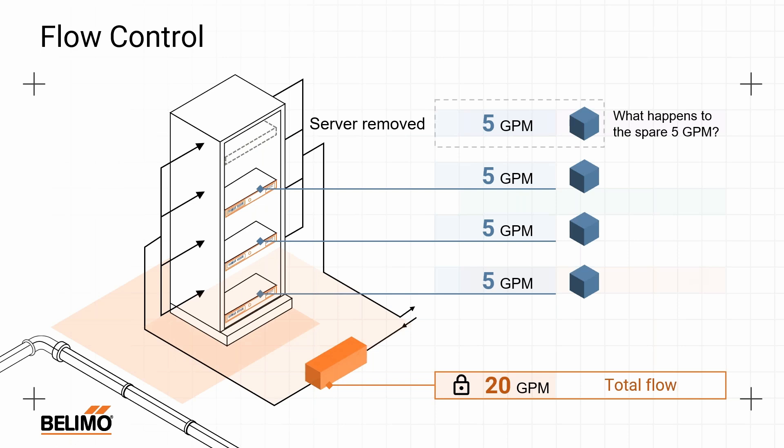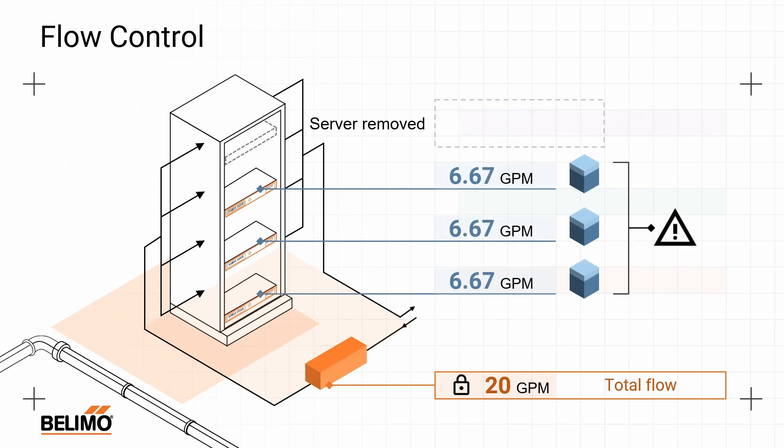I pull that server out, but there's still 20 GPM going into that rack. That extra 5 GPM is redistributed to the other three sets of cold plates on the remaining servers. This is not what we want, because now we have an overflow on those three circuits. Even though the valve is still flowing the right total amount, we're overflowing the remaining circuits. We want to make sure we don't overflow our cold plates — there can be issues surrounding erosion or breakdown of cold plate materials. They're designed at very specific flow rates, so it's fairly important that we stay at them.